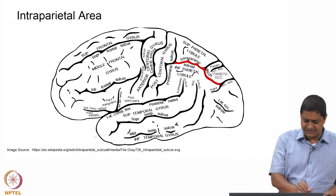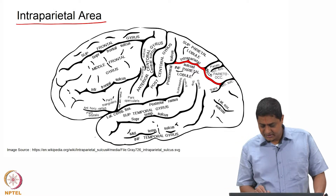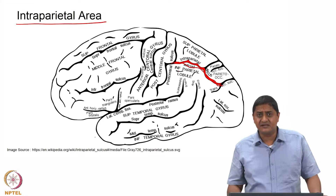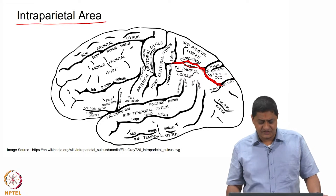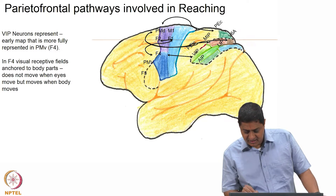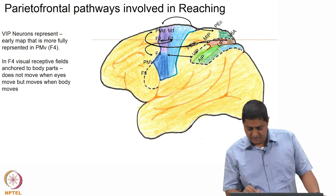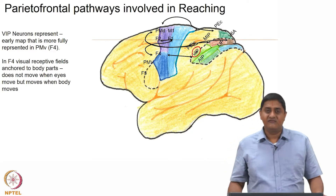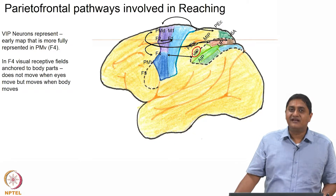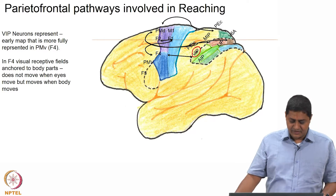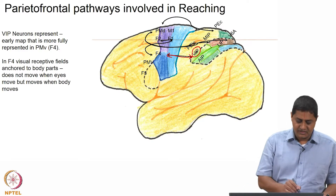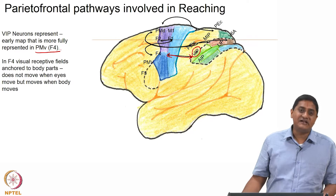Of particular interest in this discussion is the intraparietal area. It turns out that specific regions within the intraparietal region contribute to specific functions. For example, there is an area called the VIP area — ventral intraparietal area, not 'very important person' — and the neurons in the ventral intraparietal area have reciprocal connections with area F4, the ventral premotor area.